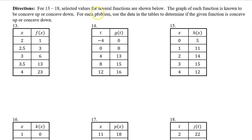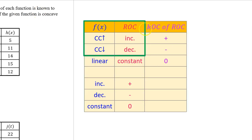For numbers 13 through 18, selected values for several functions are shown below. The graph of each function is known to be either concave up or concave down. Use the data in the tables to determine which. Recall the chart: if f of x is concave up, the rate of change is increasing; when f of x is concave down, the rate of change is decreasing.